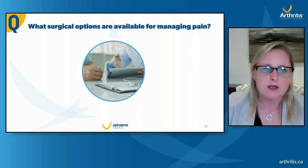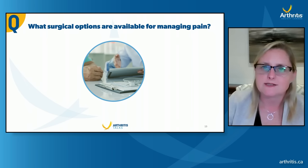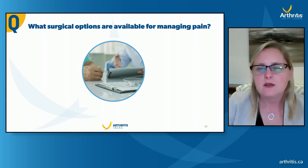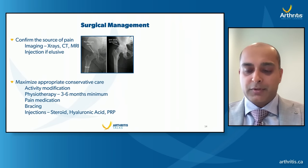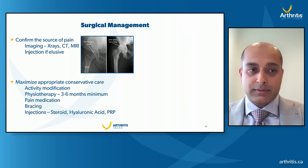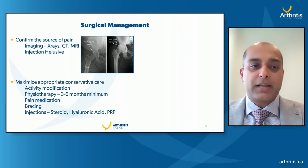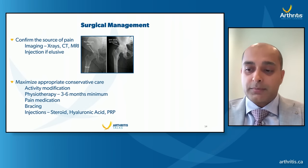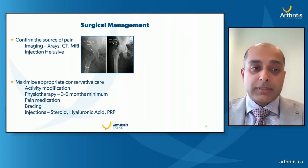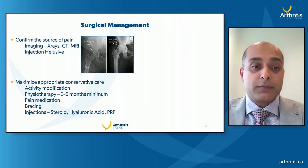Dr. Lodia, given your expertise, could you speak to what surgical options are available for managing pain from hip arthritis? With respect to surgical management, the first step is obtaining a proper history and physical examination. We then want to confirm the source of pain before drafting any surgical plan. The first way of doing so is with X-rays — they really show arthritis from the get-go. A normal hip shows a nice joint space between the ball and socket; an arthritic hip shows cyst formation, irregular bone, and loss of joint space.